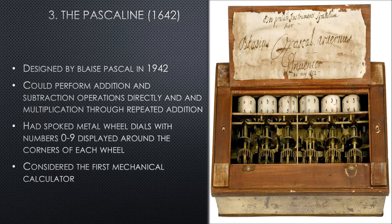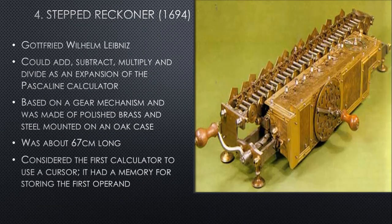The Pascaline is considered the first mechanical calculator — that's a big one. The Pascaline had spoked metal wheel dials with numbers 0 to 9 displayed around the corners of each wheel. You can try to compare this calculator to the calculators we have now — you can even have calculators inside your mobile phones, which shows the extent to which the history of computing has progressed.